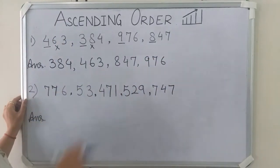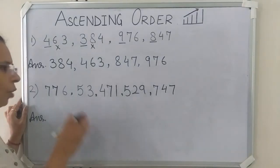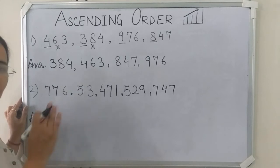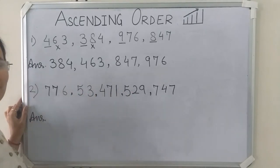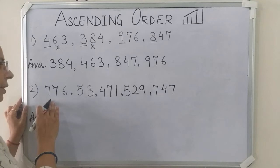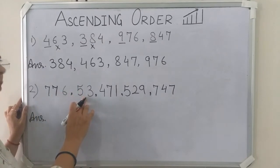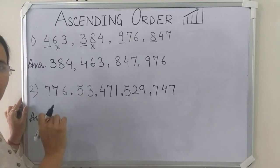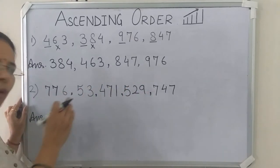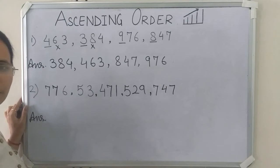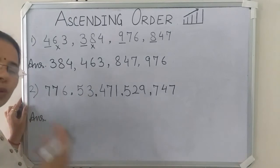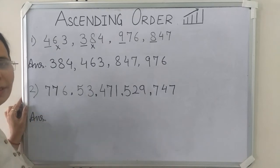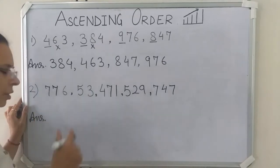Now we will see one more example. We will arrange these numbers in ascending order. First we have to make sure that all the numbers are 3 digits. You can see that 53 is a 2-digit number. So first we will write 53, because 2-digit numbers are always smaller than 3-digit numbers.